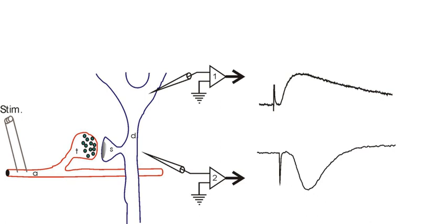Planar patch clamp is a novel method developed for high-throughput electrophysiology. Instead of positioning a pipette on an adherent cell, cell suspension is pipetted on a chip containing a microstructured aperture. A single cell is then positioned on the hole by suction and a tight connection is formed.